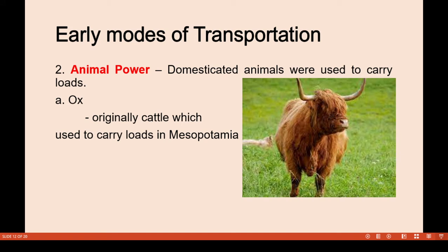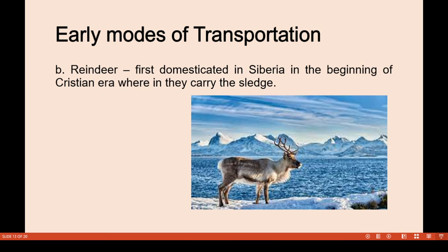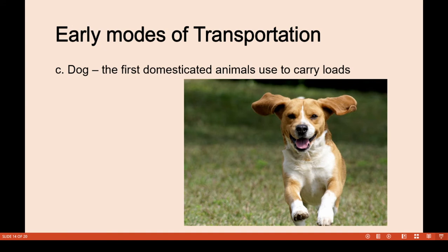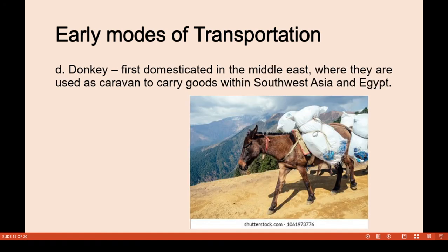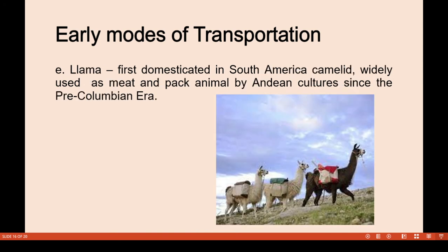The second early mode of transportation is animal power — where domesticated animals were used to carry loads. The ox was originally used to carry loads in Mesopotamia. The reindeer was first domesticated in Siberia at the beginning of the Christian era to carry sledges. The dog was the first domesticated animal used to carry loads. The donkey was first domesticated in the Middle East and used in caravans to carry goods across Southeast Asia and Egypt. The llama, first domesticated in South America, is a camelid widely used as a meat and pack animal by Andean cultures since the pre-Columbian era.